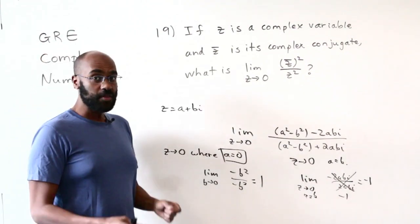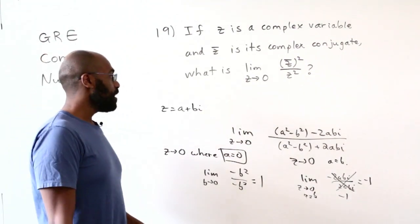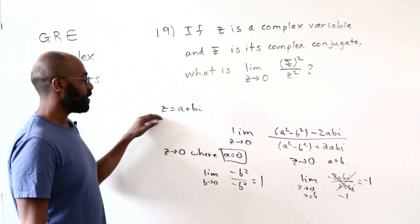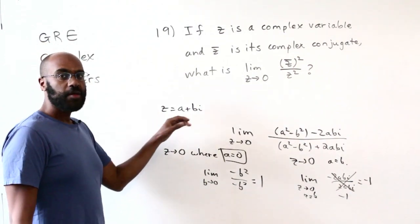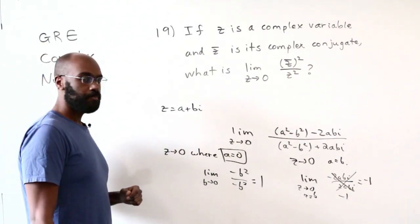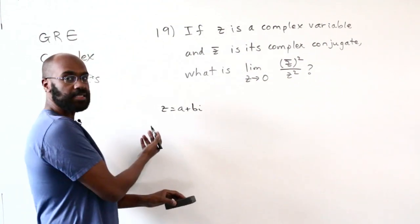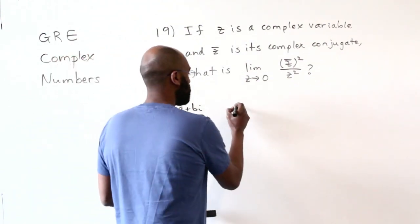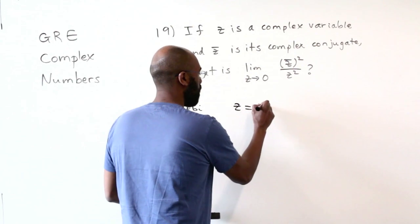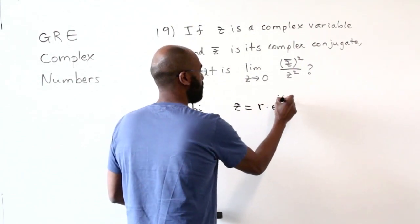Another way to think about this, which is going to be the theme of today's video, is instead of thinking about complex numbers in the Cartesian way, think about them in polar form. So, instead of writing z as a plus bi, what we're going to do is write z as r times e to the i theta.